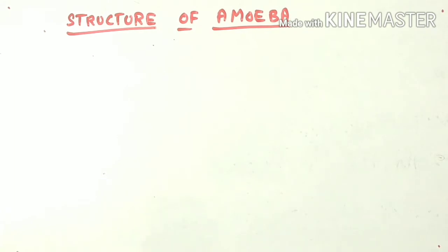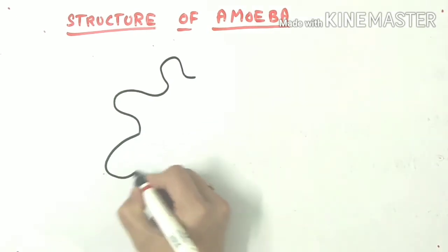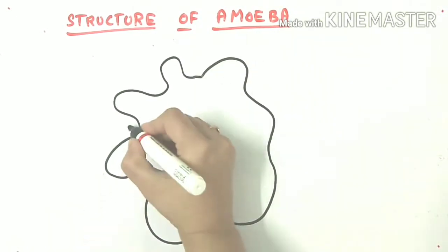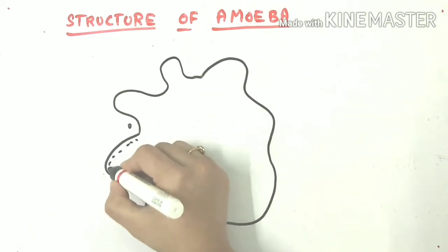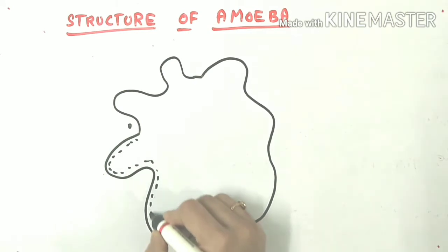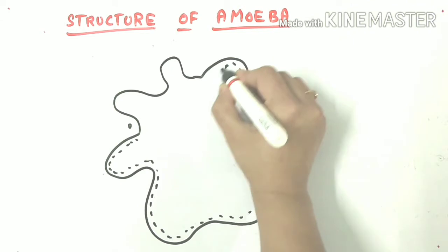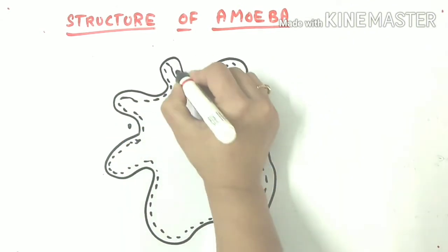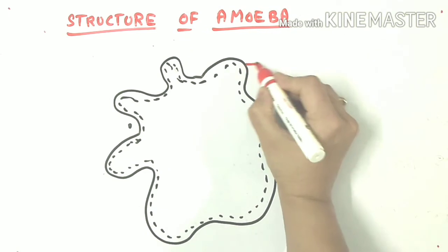Amoeba is a unicellular eukaryote with irregular shape. Here I am drawing a small food particle. Now I am drawing ectoplasm — ectoplasm is the dense part of cytoplasm, and it forms an ectoplasmic tube which takes in the food and converts it into a food vacuole.